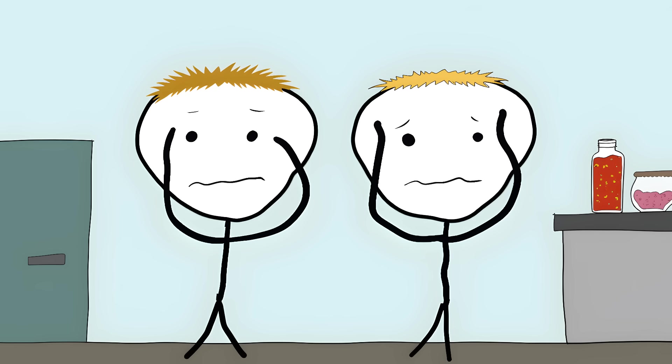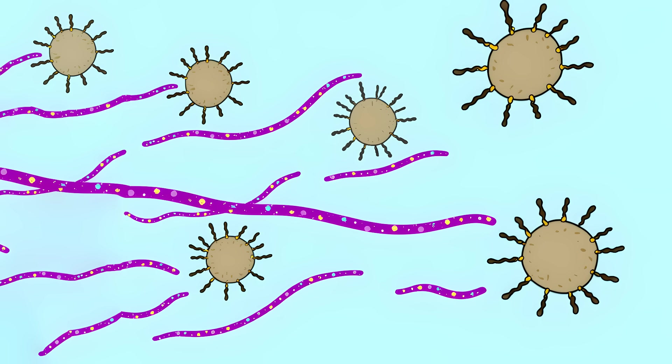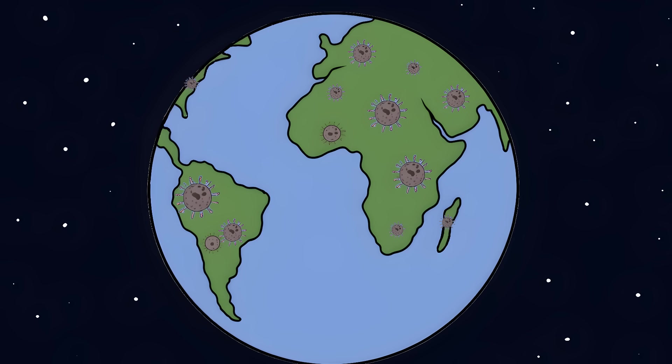Scientists are worried because prions can jump between species. All it takes is one mutation, one slight change in these prions. Then we'd have something that spreads faster than any zombie virus in the movies.